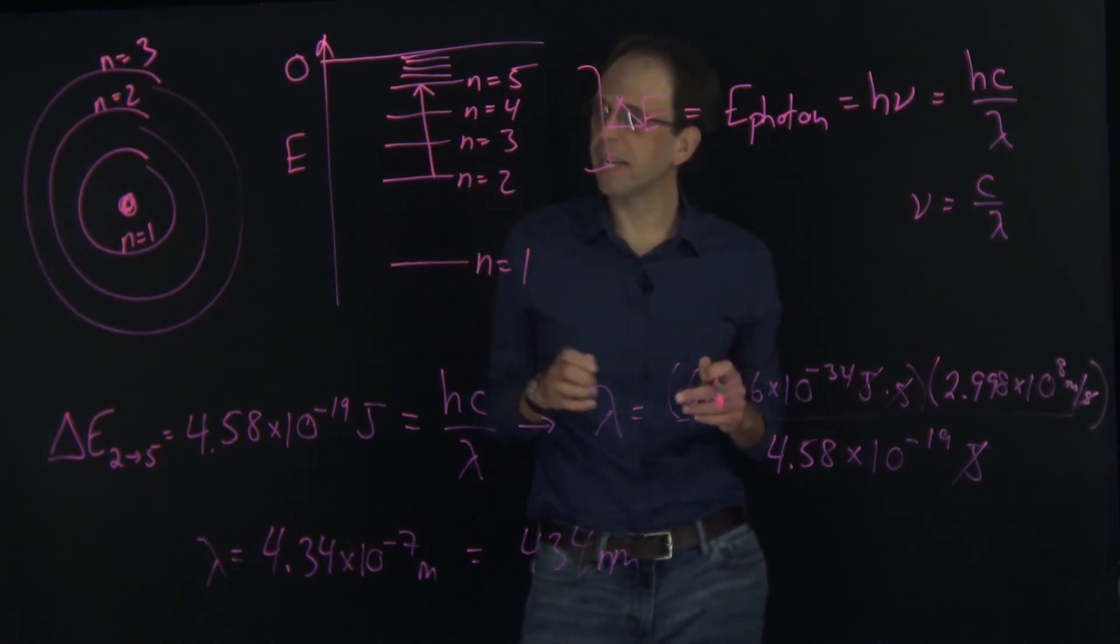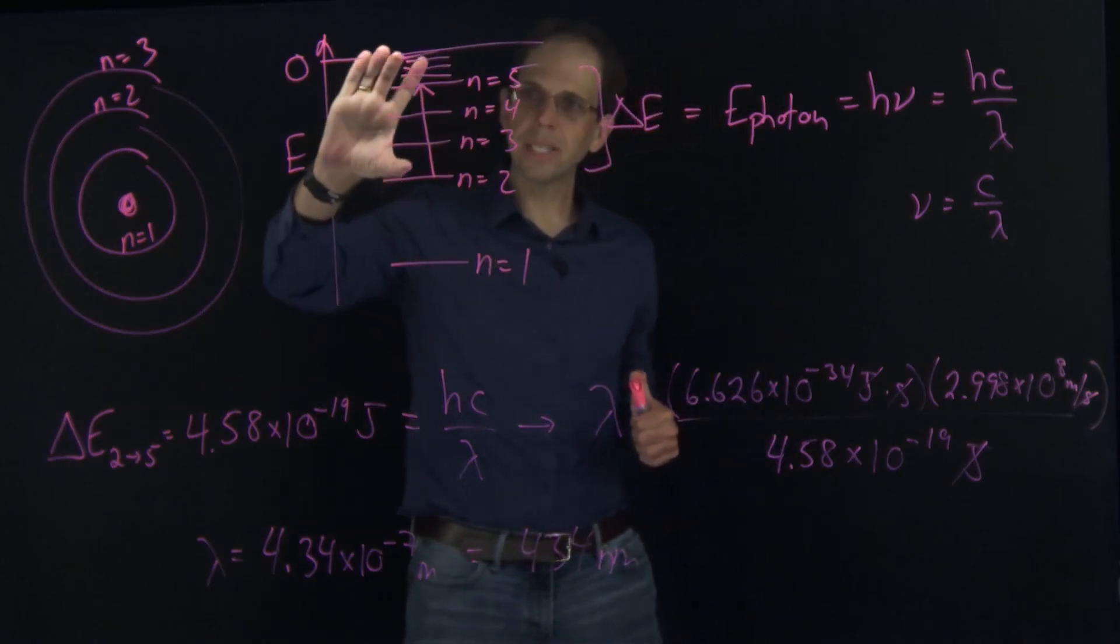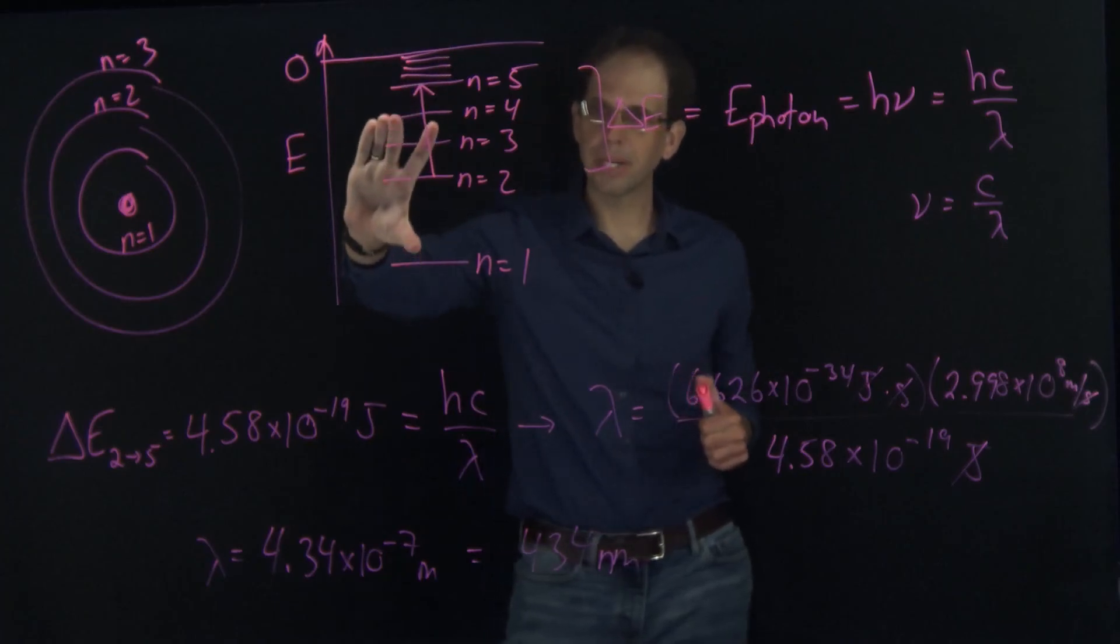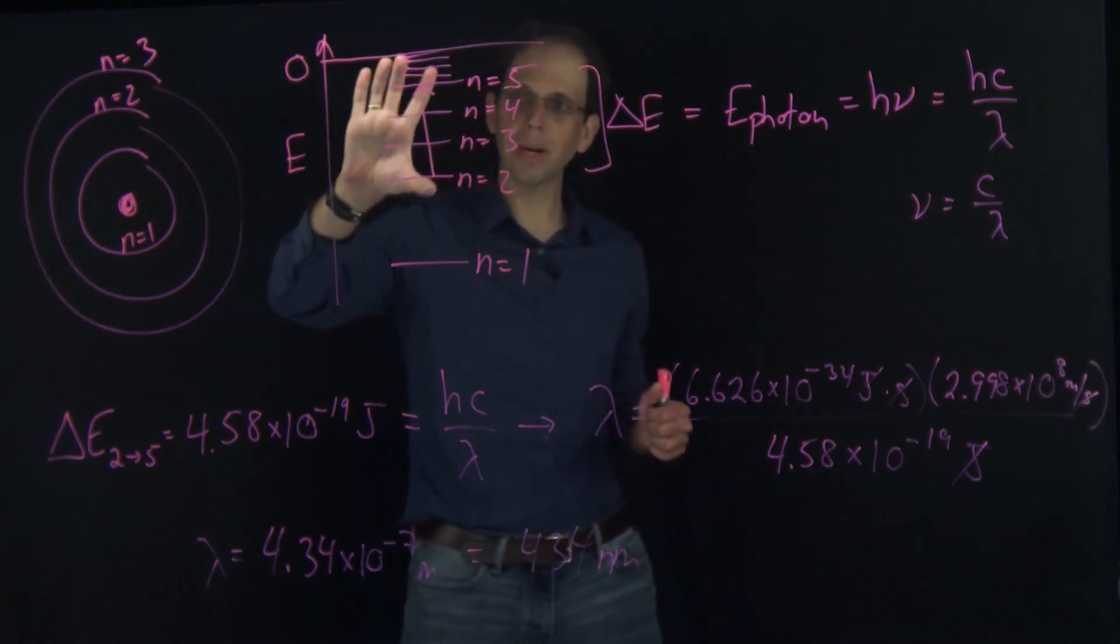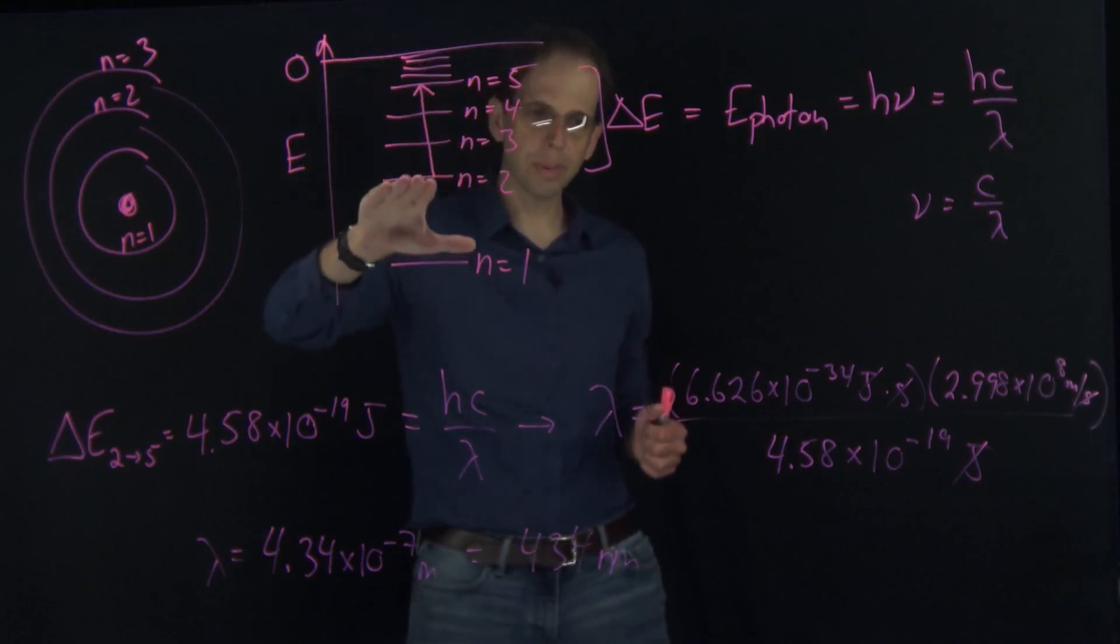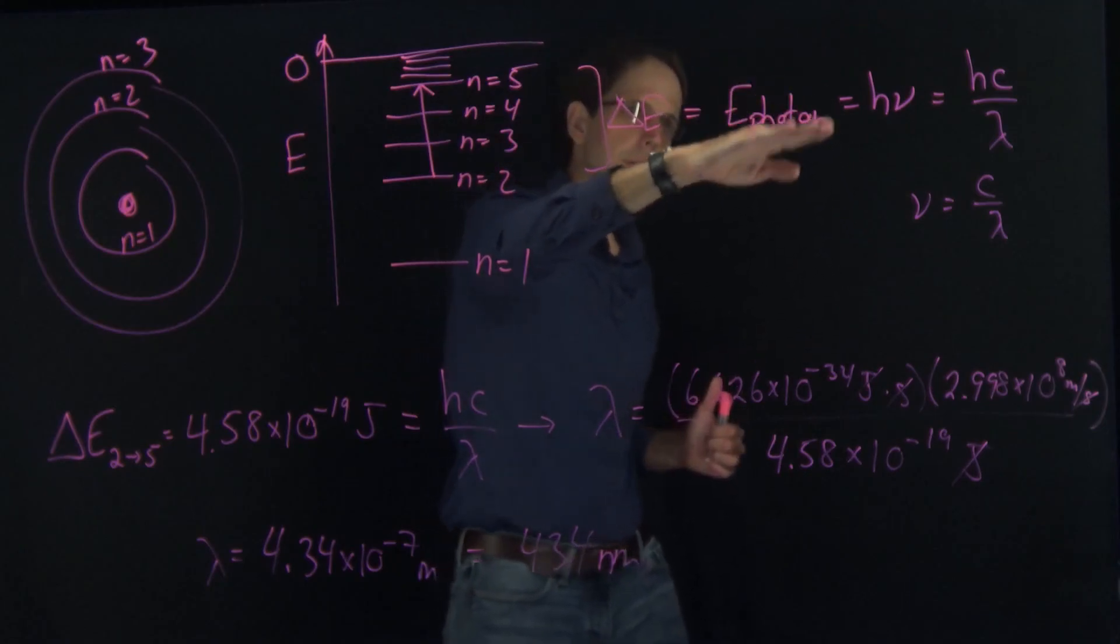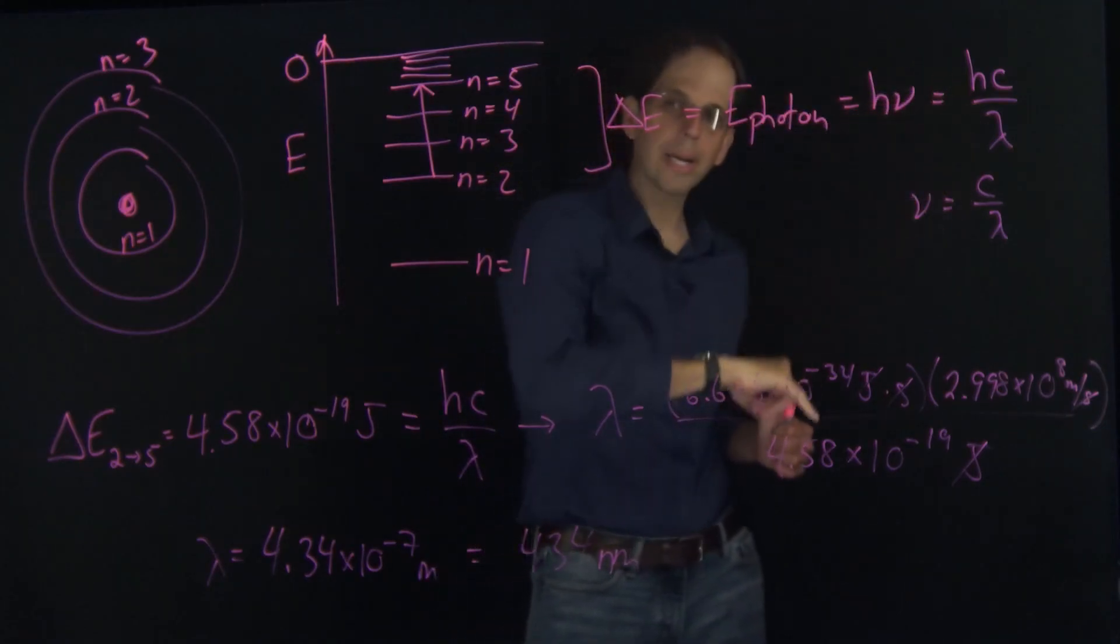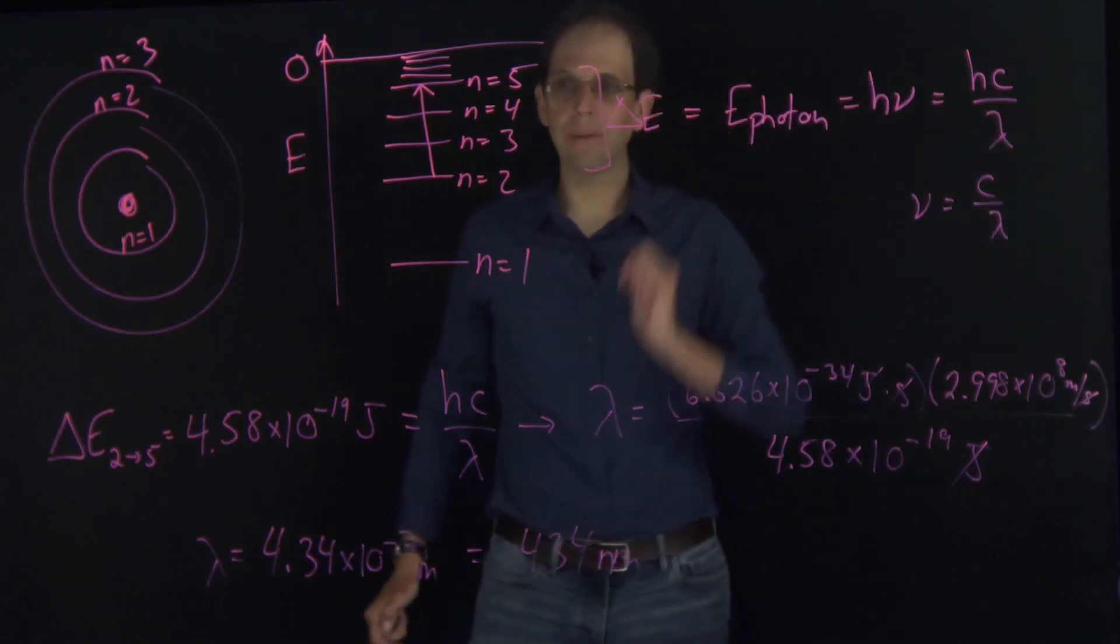Just to reiterate, the key ideas here are that we want to figure out what is the energy difference between the two states we're interested in, calculate that delta E using the general Bohr model expression for the energies of each of these orbits, and then set that delta E equal to the energy of our photon, which is either H nu or H C over lambda, depending on whether you're interested in the frequency or the wavelength.